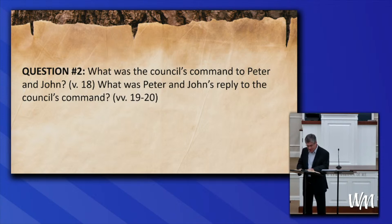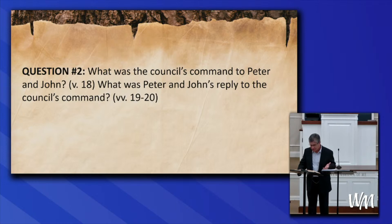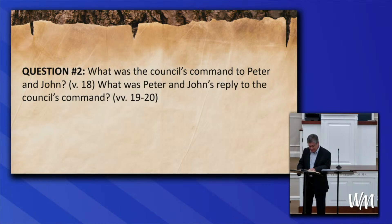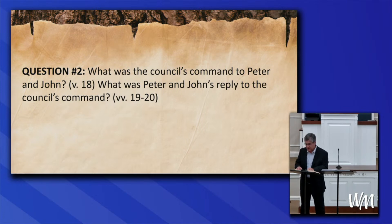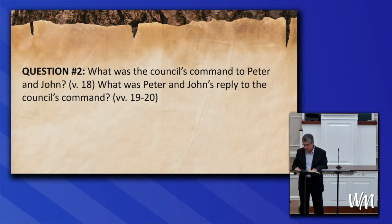In Acts 4:23-31, Peter and John returned to their companions and reported everything. The disciples prayed, quoting from the Psalms: 'The peoples plot vain things; the kings of the earth took their stand, and the rulers were gathered together against the Lord and against His Christ.' They acknowledged that Herod and Pontius Pilate, with the Gentiles and people of Israel, gathered to do whatever God's hand and purpose had determined. They prayed: 'Lord, look on their threats, and grant to your servants that with all boldness they may speak your word, by stretching out your hand to heal, and that signs and wonders may be done through the name of your holy servant Jesus.' And when they had prayed, the place was shaken, they were filled with the Holy Spirit, and they spoke the word of God with boldness.